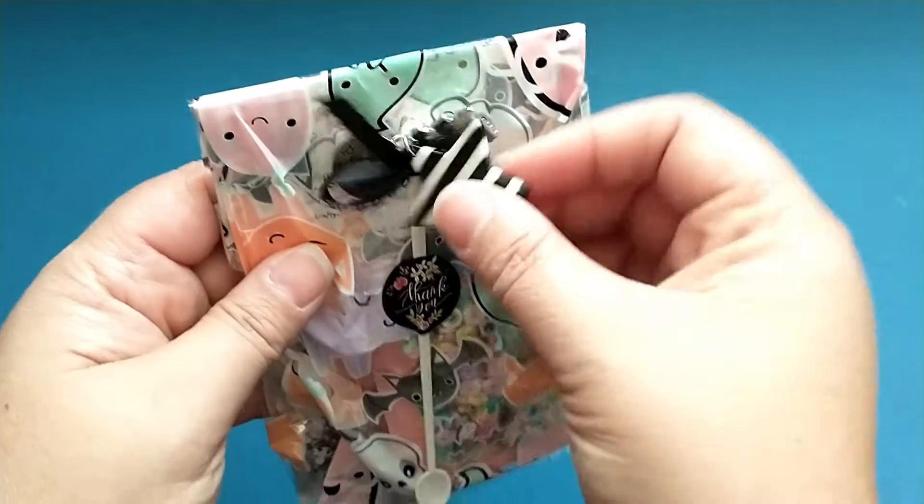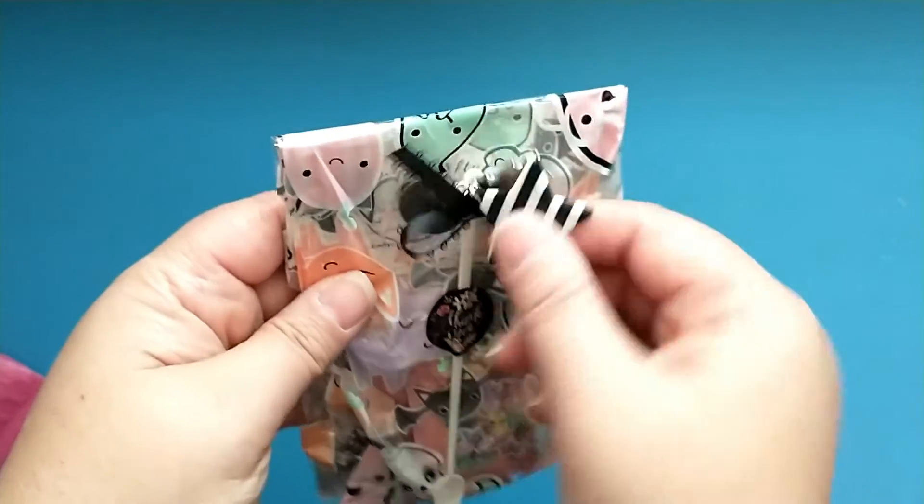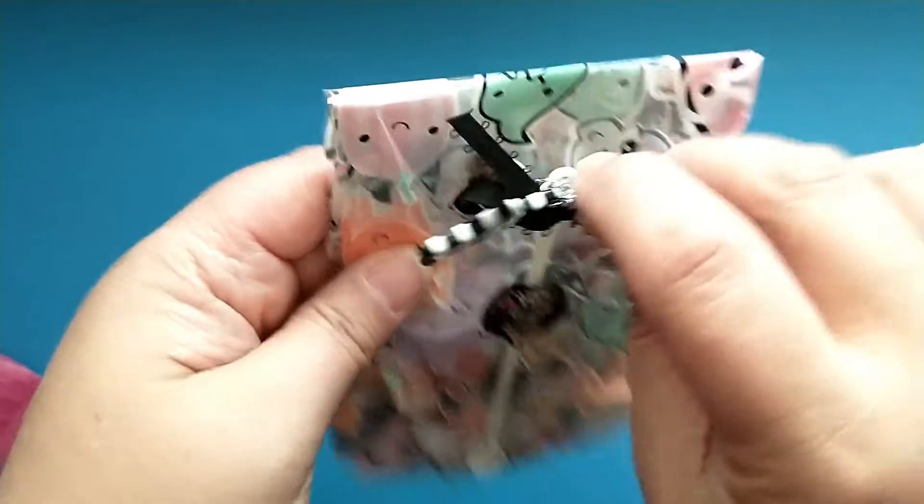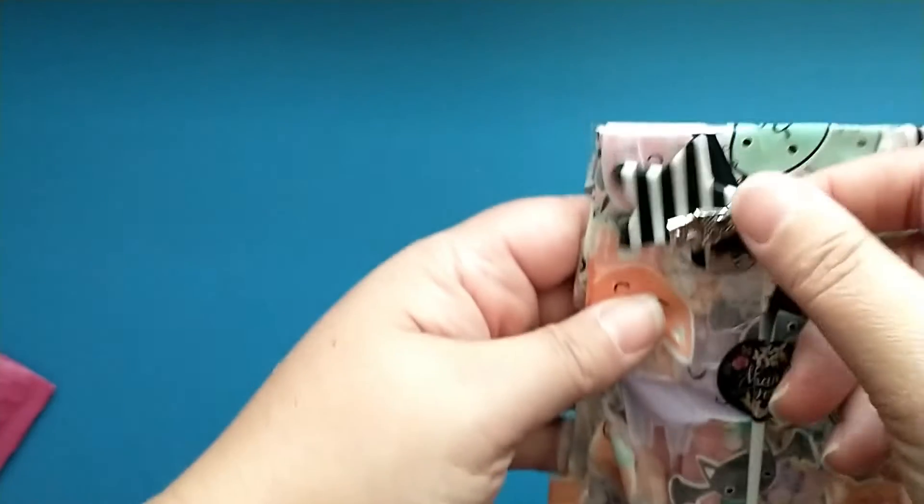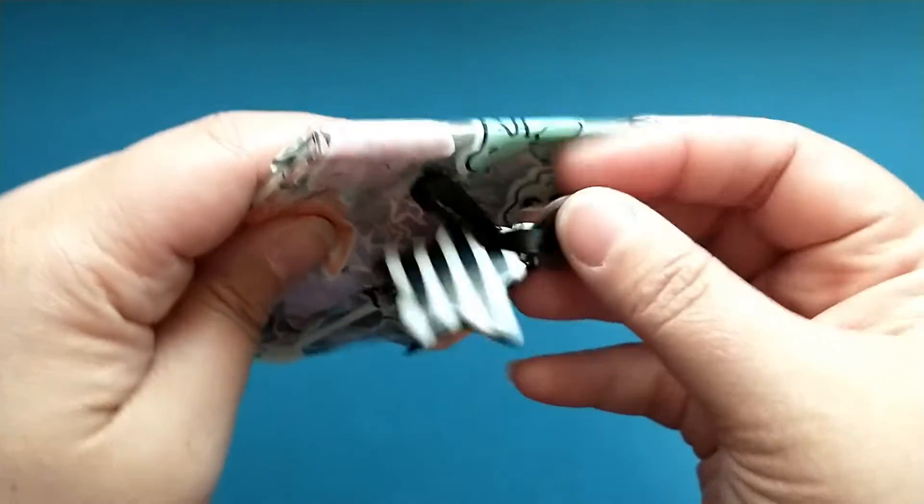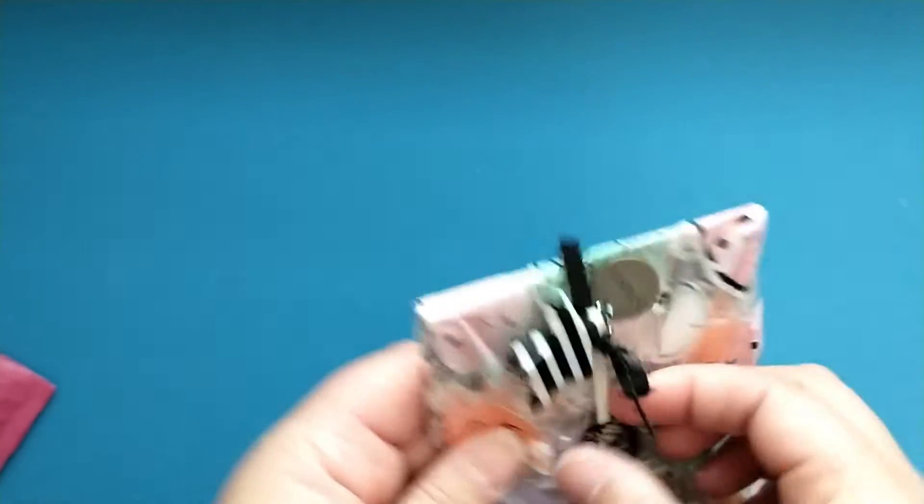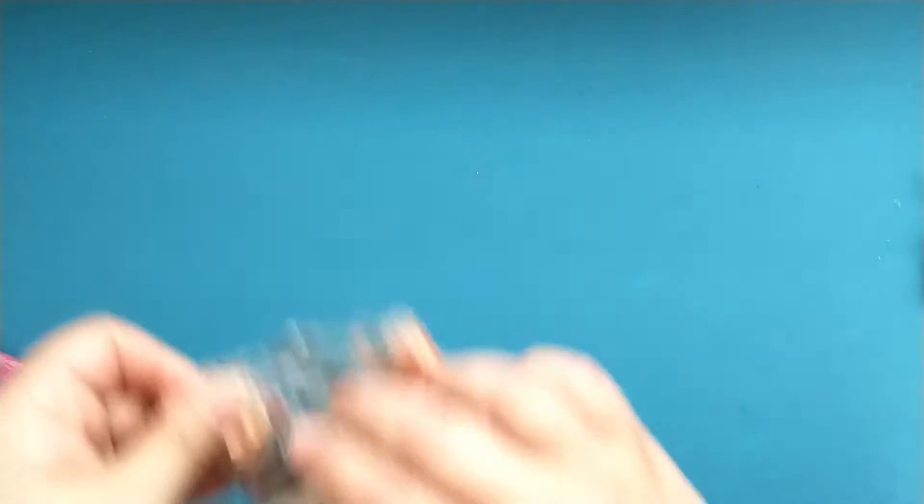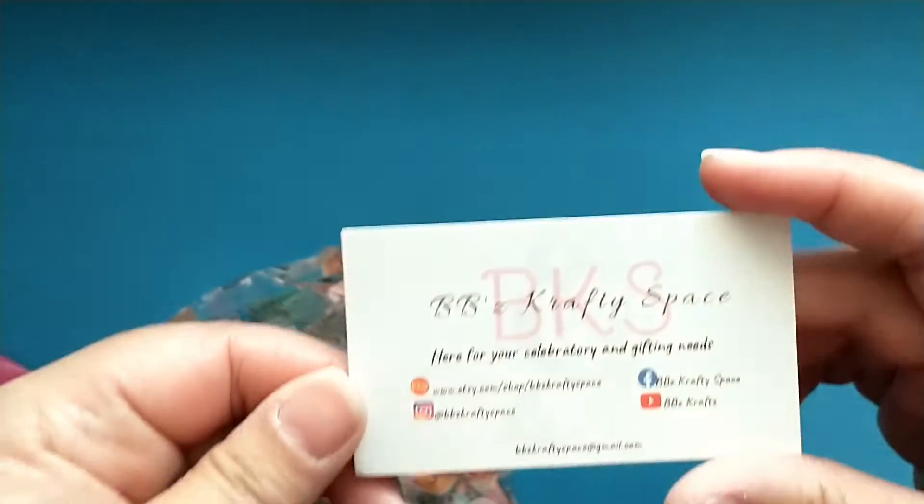She sent one of the sequin spoons, a striped star, a little haunted house, and also a little charm that says poison. So that will be super fun to have. Here is her information if you want to check her out.